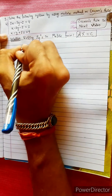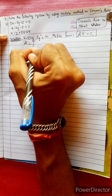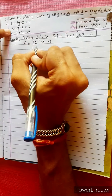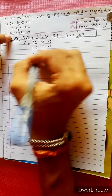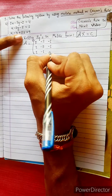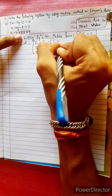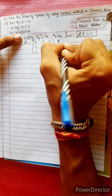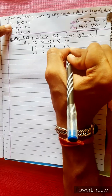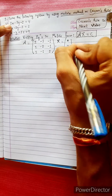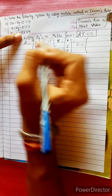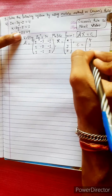This matrix A is called the coefficient matrix. The equations give us: 2 minus 3 equals minus 1; minus 2 equals minus 1. The variable matrix x contains x, y, z. And C will be equal to 4, 1, 9.